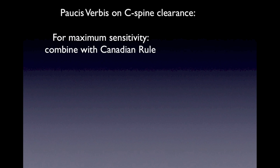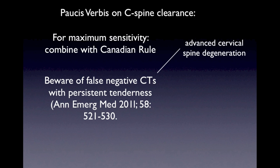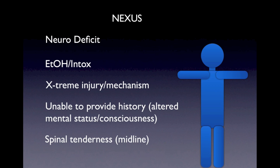A few words on C-spine clearance for maximum sensitivity combined with the Canadian rule: be aware that false negative CTs can happen in patients with persistent tenderness, and there seems to be an association with cervical spine degeneration, small fractures, and a multi-directional force in the history. In these cases, you might want to consider an MRI in a patient who's still tender.